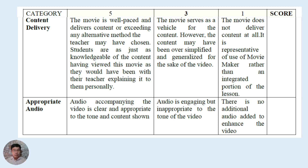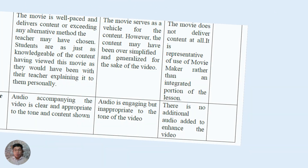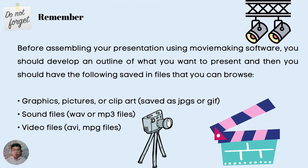Remember — before assembling your presentation using movie making software, you should develop an outline of what you want to present. You should also have the following files saved so you can browse them: graphics, pictures, or clip arts saved as JPEGs or GIF; sound waves saved as WAV or MP3 files; and video files saved as AVI or MPEG files. Once you have all of that — lights, camera, action!